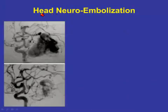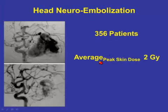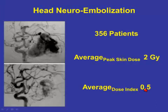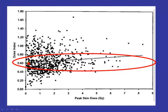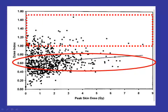And again, if we look at the head neuroembolization data — the 356 patients — the average peak skin dose turned out to be a couple of gray, and the average dose index was about 0.5. So that's good news. In these particular cases, we were overestimating the true peak skin dose. Here's all the data from their study, and what you find is that on average the numbers are like 0.5, 0.6, 0.7, as depicted here. That is the good news. Unfortunately, occasionally we get dose index values higher than one. I'm fairly confident that the dose index for most of your patients is going to be less than one. But in maybe five or ten percent, they will actually be greater than one — and the number you're looking at on your monitor as you do the procedure will actually be underestimating the true peak skin dose.